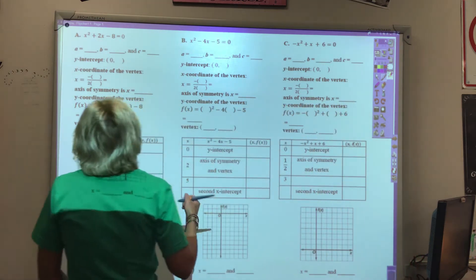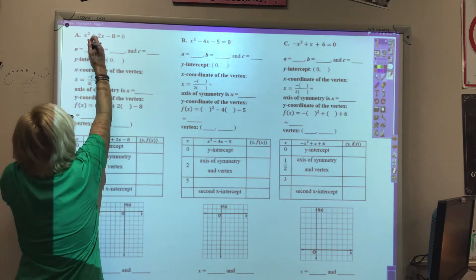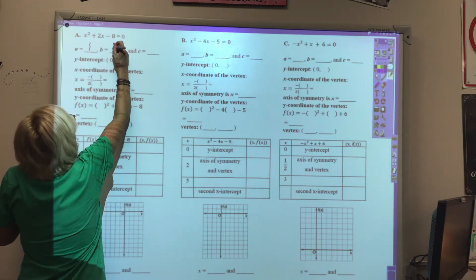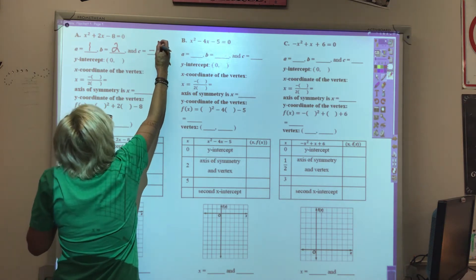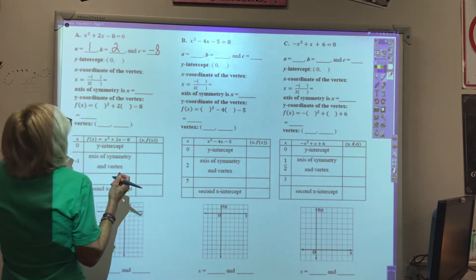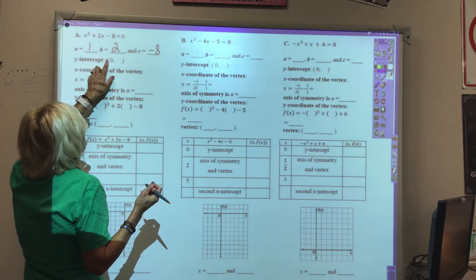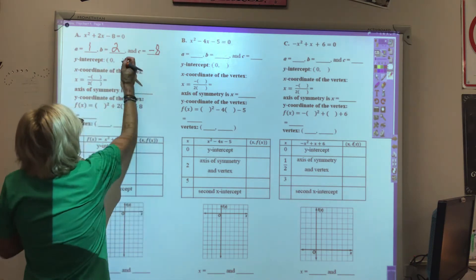We'll find a, b, and c, so our coefficients are 1, 2, and negative 8. Our y-intercept is always 0c, so 0, negative 8.